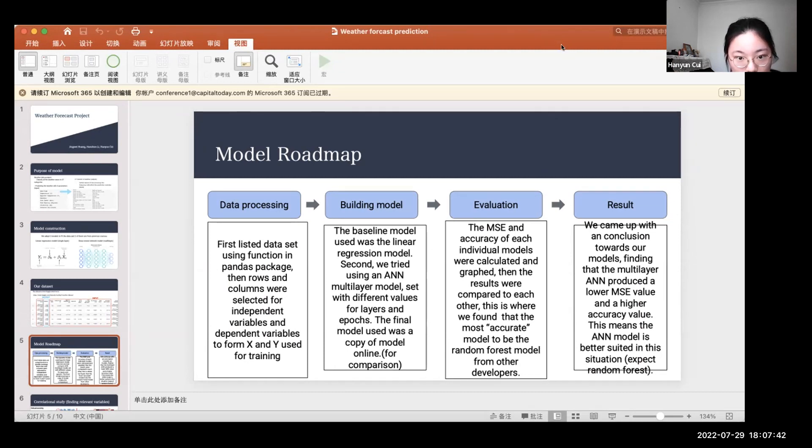Secondly, we tried using an ANN multilayer model set with different values for layers and epochs. The final model used was a copy of model online, which is only for comparison.